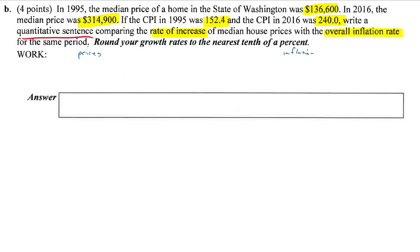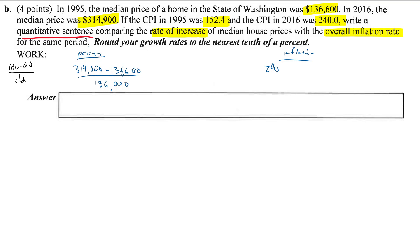Each one follows the same rule — relative growth: new minus old over old. For the prices, the new price was 314 and the old price was 136, divided by 136. For inflation, the later CPI was 240-something; I'm going to subtract the earlier CPI of 152.4 and divide by 152.4.